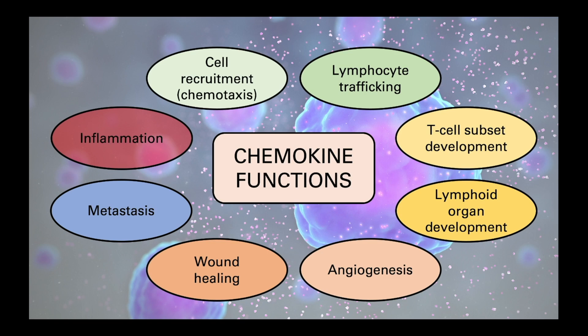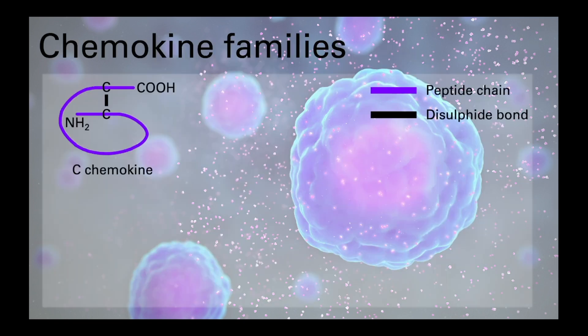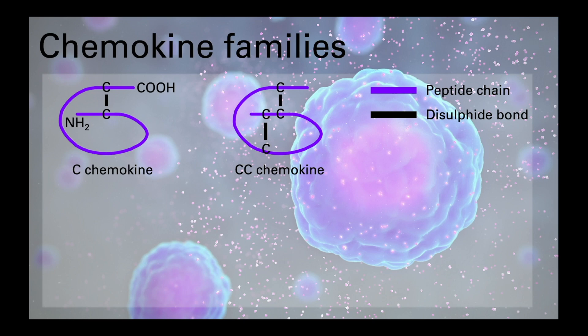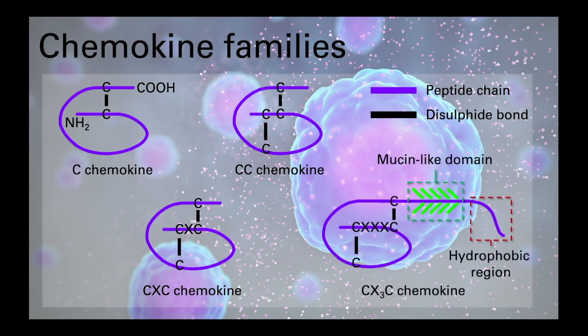There are four main families of chemokines, based on a systematic nomenclature around the presence of three or four conserved cysteine amino acid residues in the N-terminus. These families are C, CC, CXC, and CX3C. In CXC, the first two cysteine residues are separated by one variable amino acid, while in CX3C, the first two cysteine residues are separated by three variable amino acids.